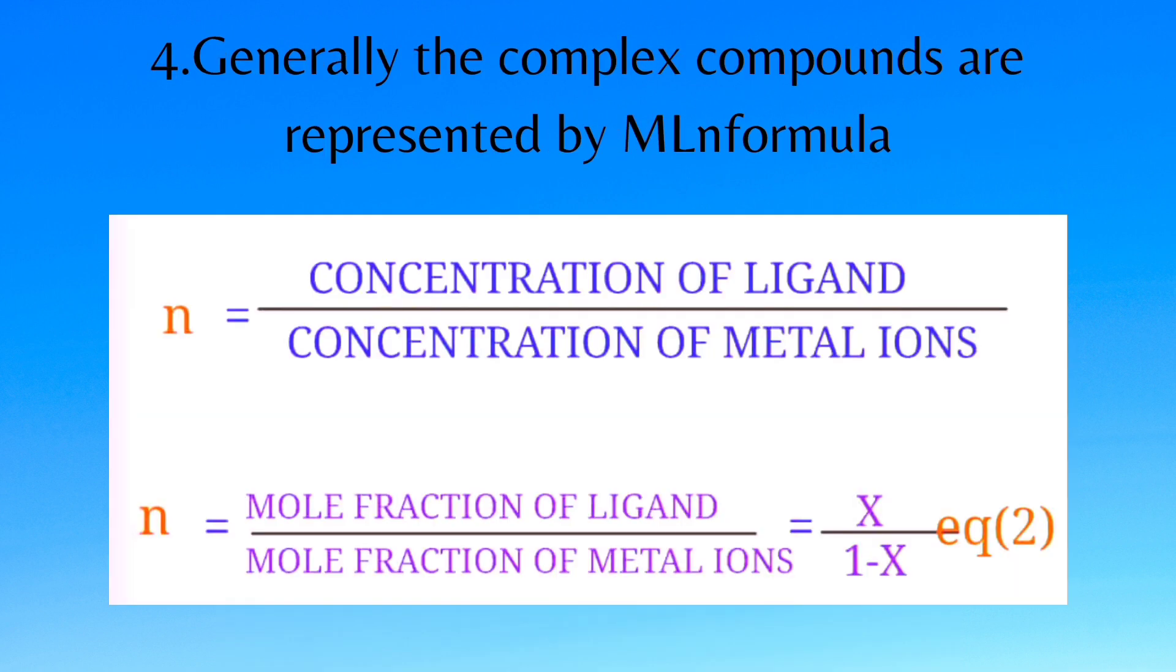The formula of the complex compounds is generally represented as MLn, here n indicates the ratio of concentration of ligand to the concentration of the metal ion.